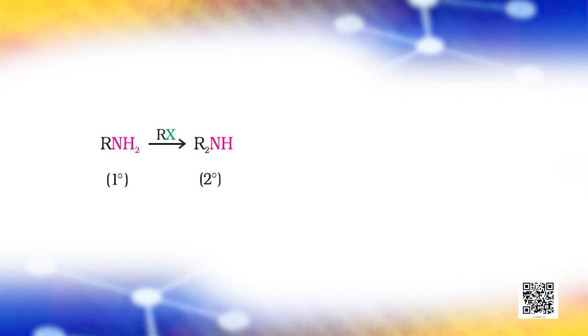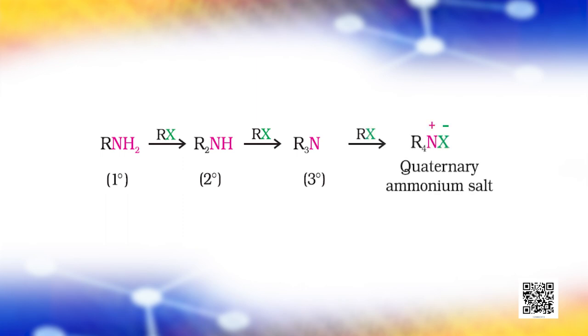The primary amine behaves as a nucleophile and can further react with alkyl halide to form secondary and tertiary amines, and finally a quaternary ammonium salt. Ammonolysis has the disadvantage of yielding a mixture of primary, secondary and tertiary amines and also a quaternary ammonium salt. However, primary amine is obtained as a major product by taking a large excess of ammonia.